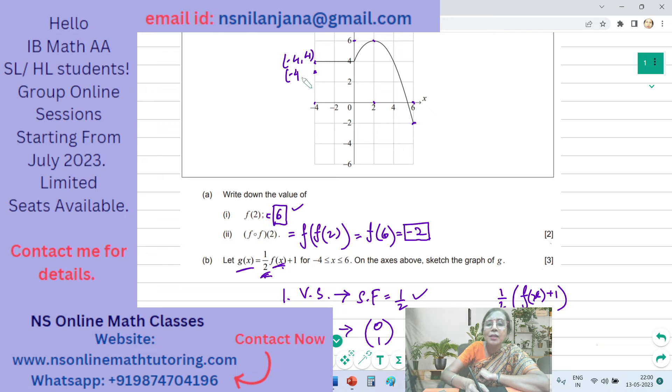Now its X value stays unchanged, it is minus 4 comma 3. And this one originally was 0 comma 4 and now it will be 0 comma 3.